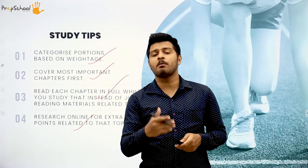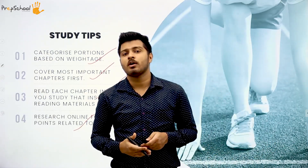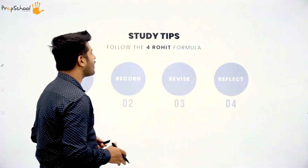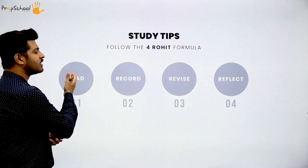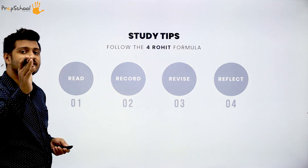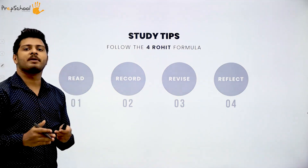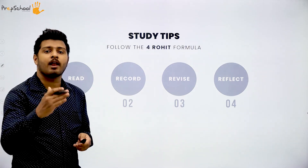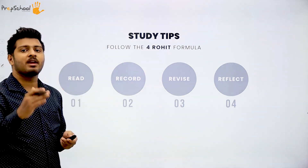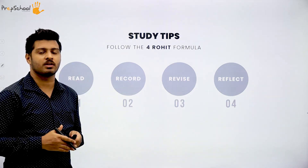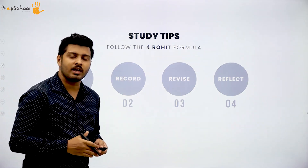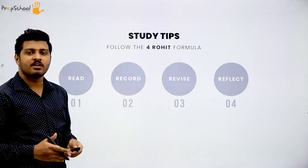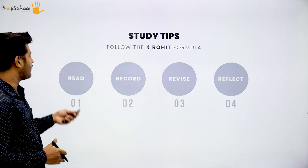Now I want to share a particular formula for studying efficiently called the 4-hour formula. The first element is Read. Read all topics properly — whichever topic you choose to study, read it thoroughly with full concentration. Don't give it an overlook reading; do an extensive, focused reading.